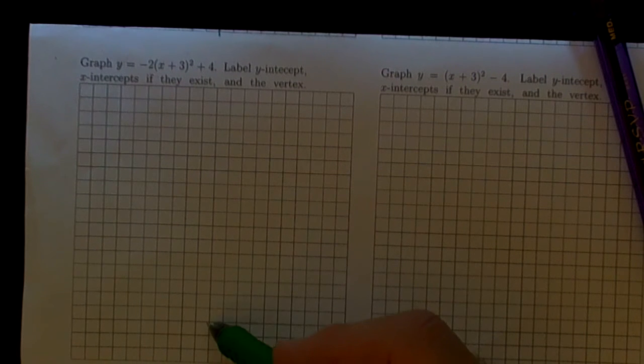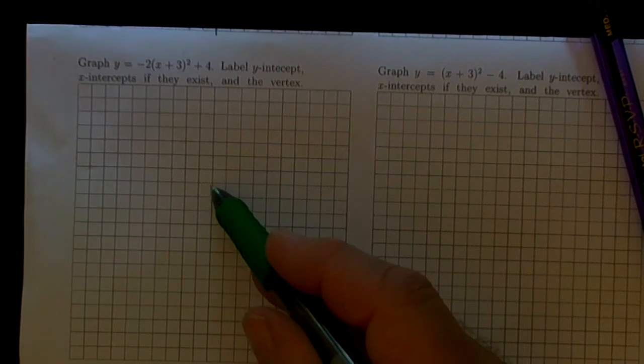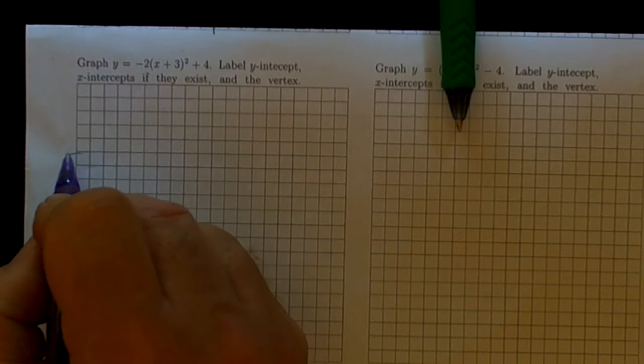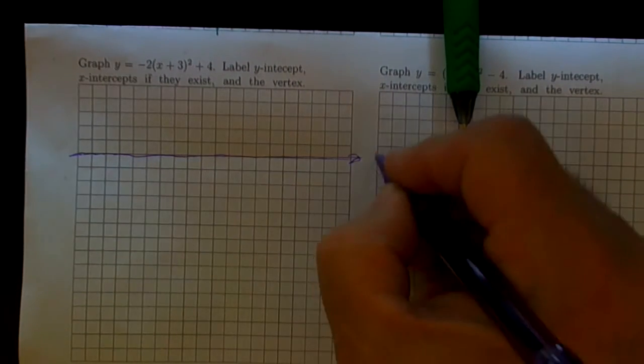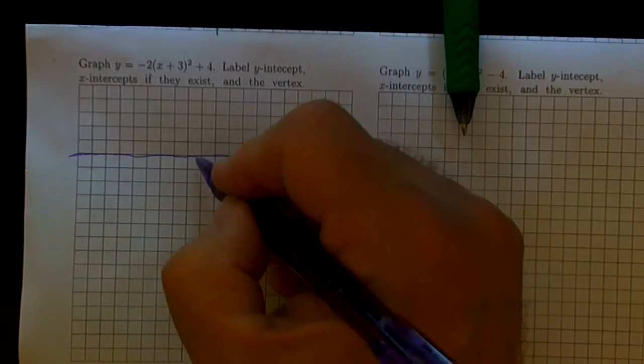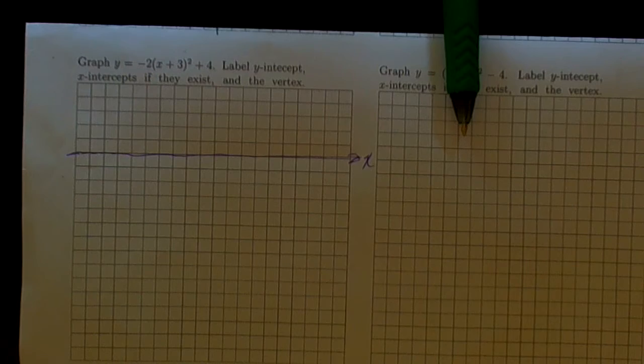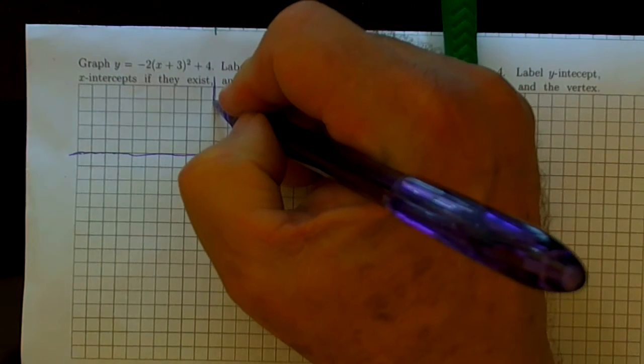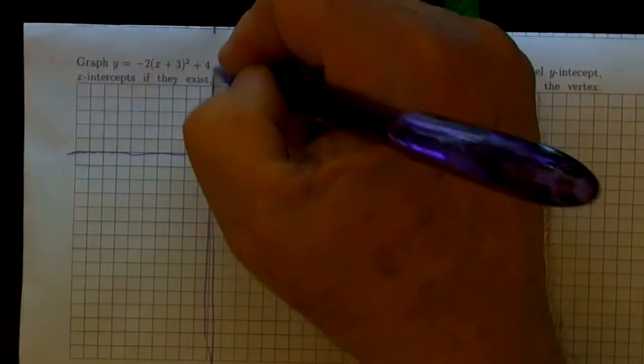I think if we go down to 14 units below, we can put our x-axis about right there. Then I can still go up 1, 2, 3, 4—things are going to fit in just fine. And we'll put the y-axis about right here. I needed to be able to get over to those x-intercepts.